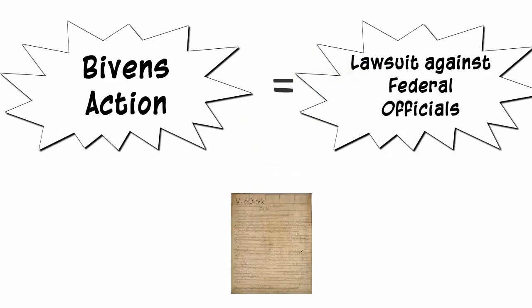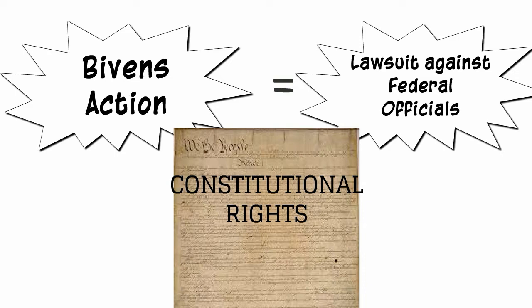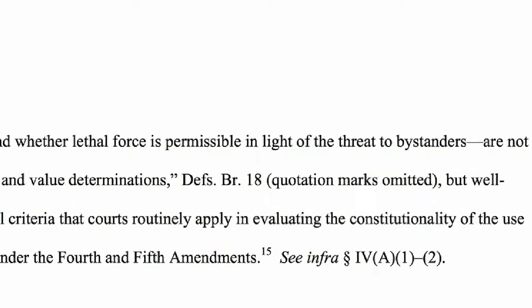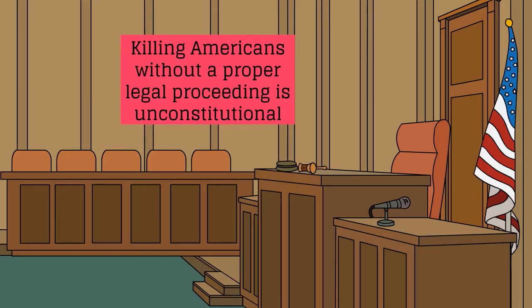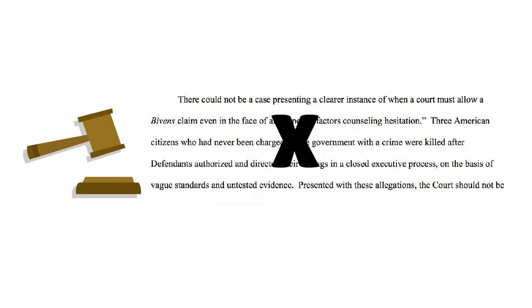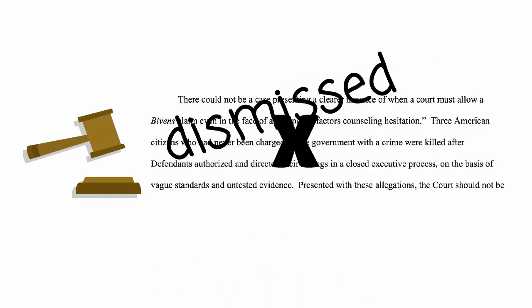The type of lawsuit they brought is called a Bivens action. In a Bivens action, the plaintiff alleges that federal officials violated his constitutional rights. The family alleged that the use of lethal force against Mr. Aulaki was unconstitutional. The family said there should have been an appropriate legal procedure before the decision was made to kill Mr. Aulaki. The judge in the case rejected the family's argument and dismissed the case, ending the lawsuit against the federal officials who ordered the death of Mr. Aulaki.